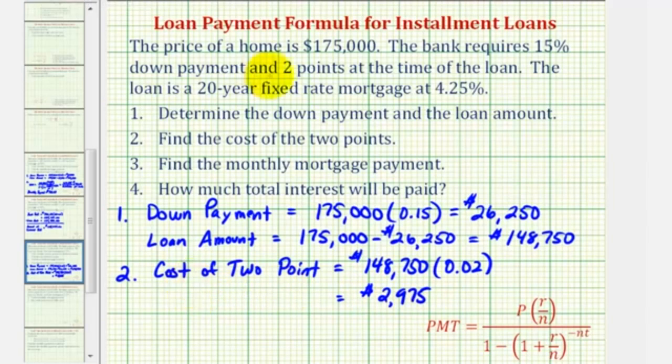So this means in order to purchase the home with this loan, the buyer would have to have the down payment and the cost of the two points in order to purchase this home.